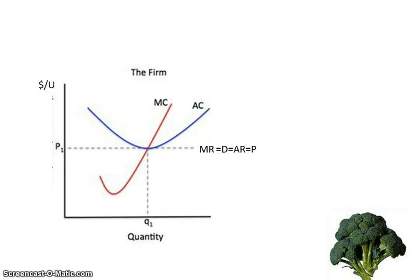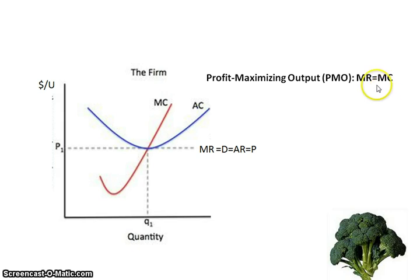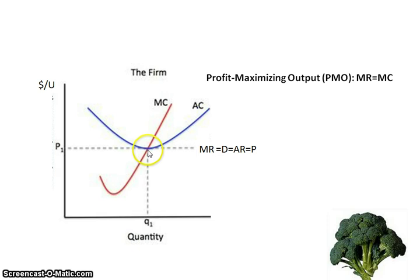We're going to go over the different efficiencies and the profit maximizing output. The formulas are key — you need to have these memorized in order to find what they are and use them on the graph. The first one is profit maximizing output. The formula for that is MR equals MC. You have your MR curve, which is your demand curve, and your marginal cost curve. Where those two intersect gives you the profit maximizing output.